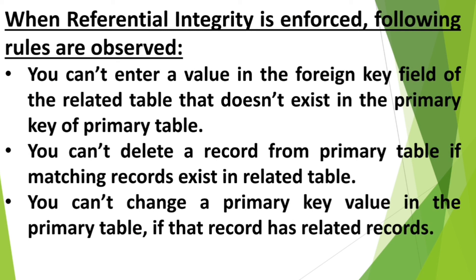Second: you cannot delete a record from the primary table if matching records exist in related tables. If a book is allotted to a student, we cannot delete the record of that student from the student details table. Third: you cannot change a primary key value in the primary table if that record has related records. If in the book details table a book is allotted to a student, we cannot change his admission number — we cannot change the primary key field for which a record exists in any other table.